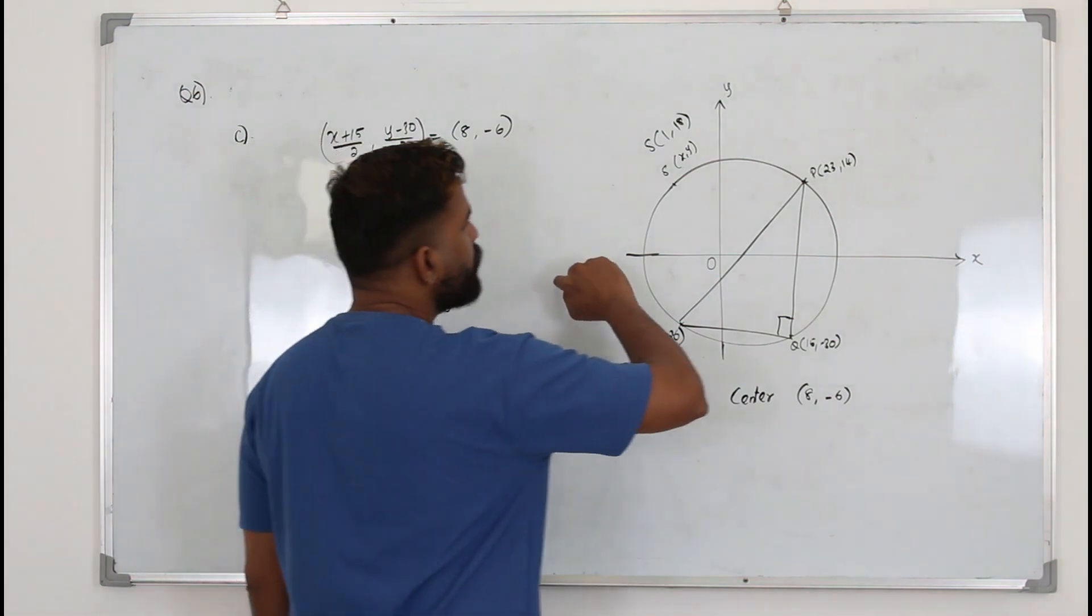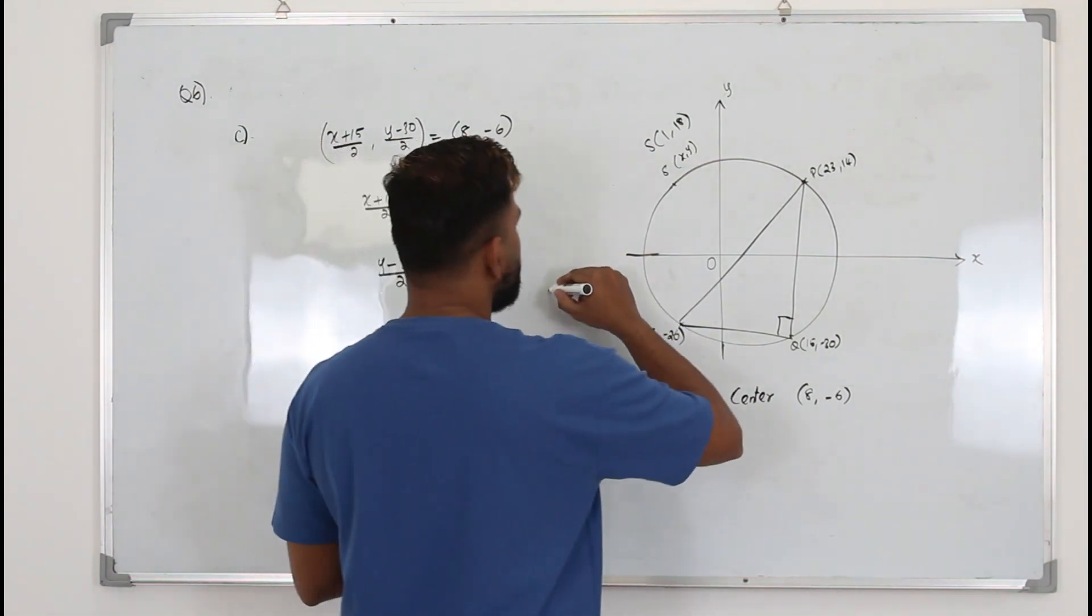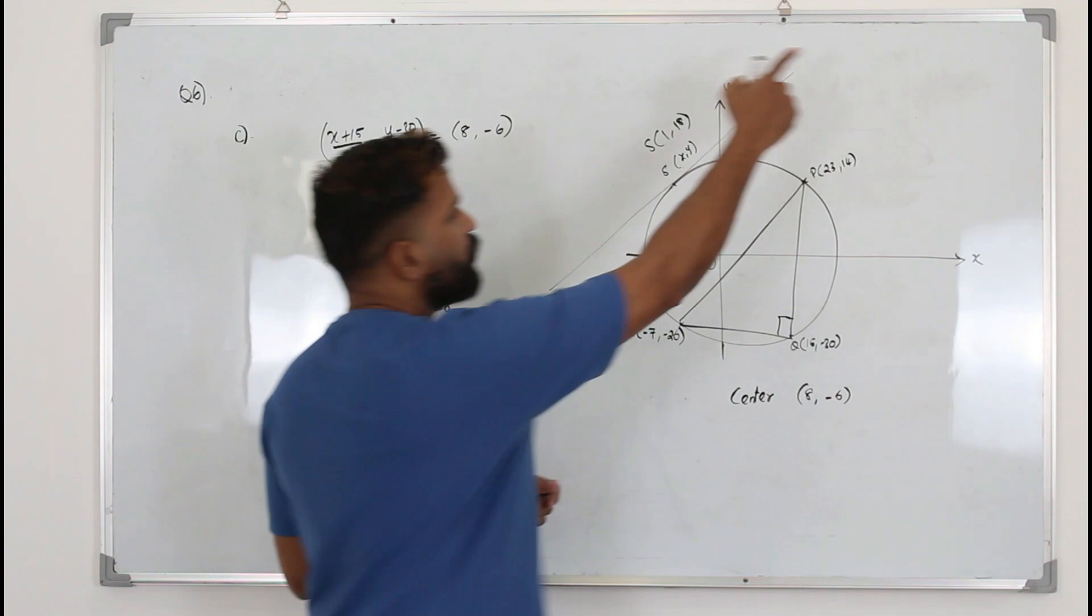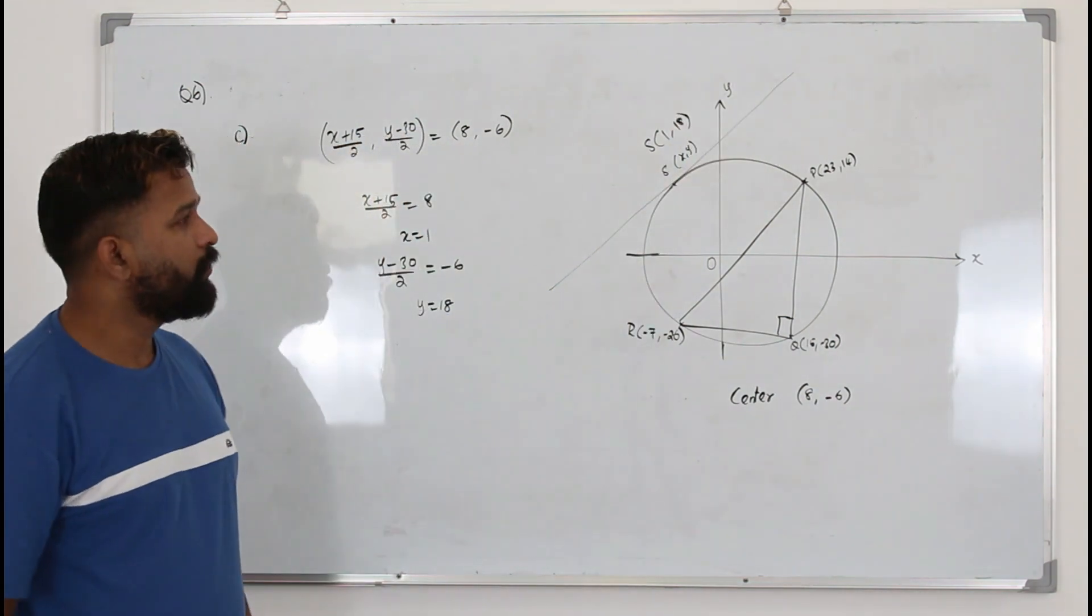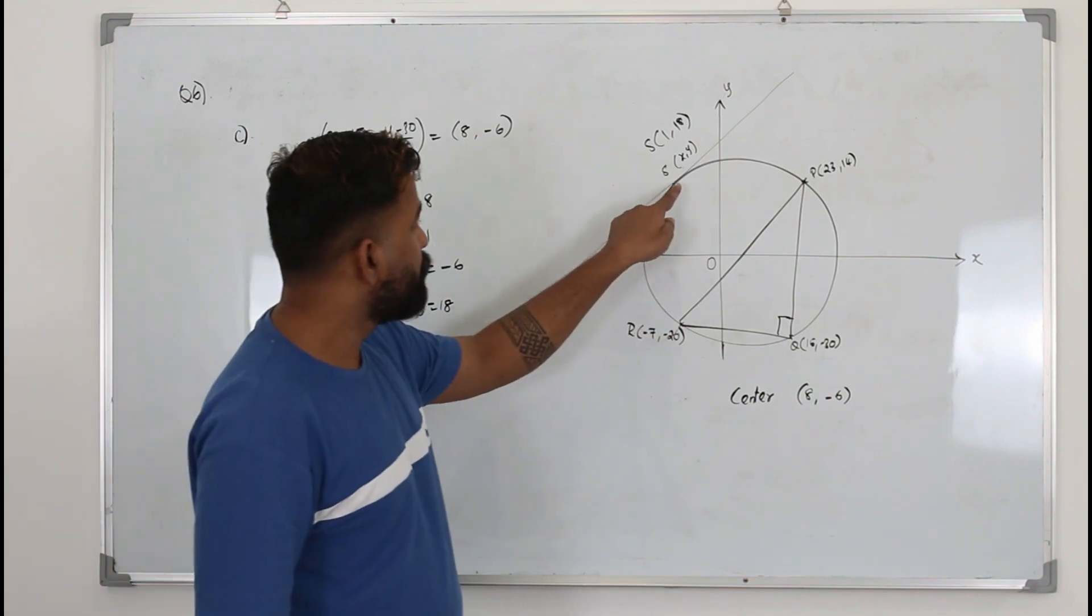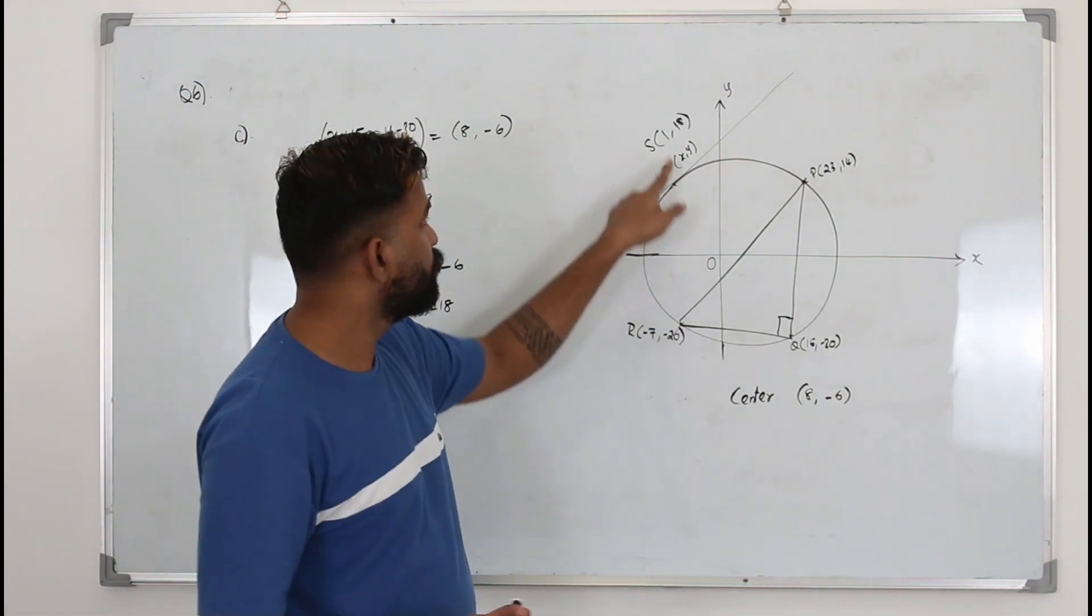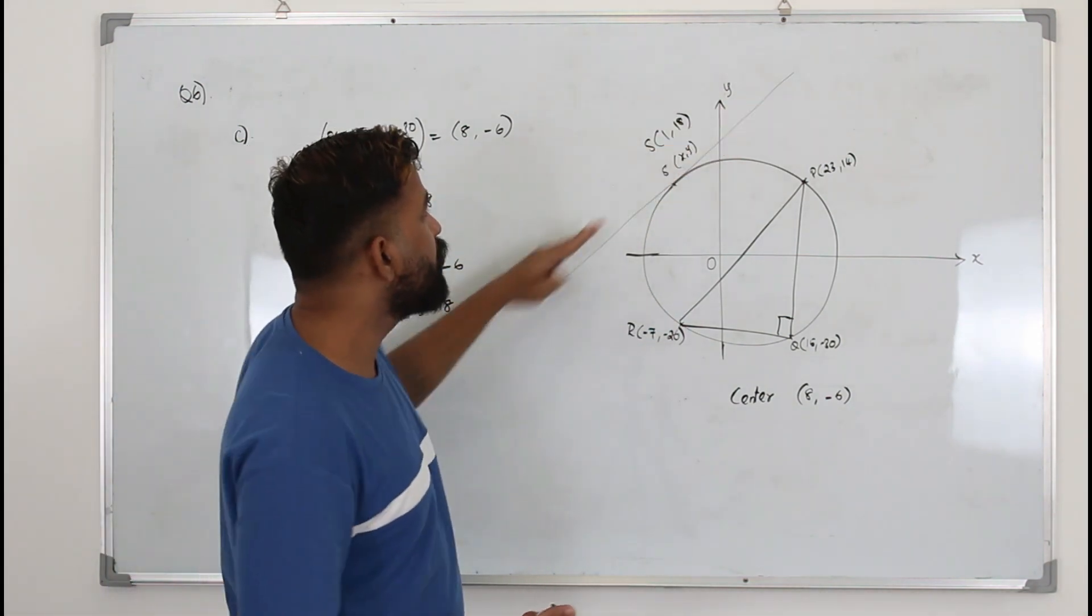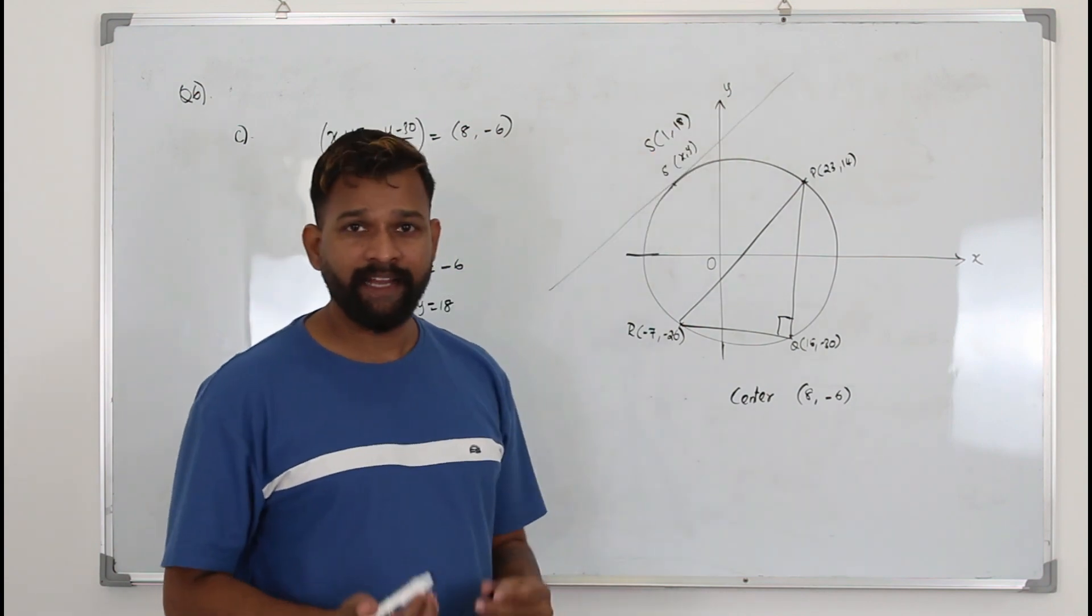Now they want you to find the equation of a tangent at this point. They want you to find the equation of this tangent. If you want to find the equation of a tangent or normal, you need a point that lies on the line. We have a point. And we need the slope of this straight line, tangent.